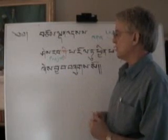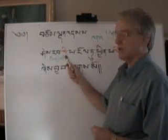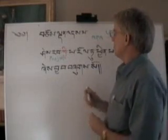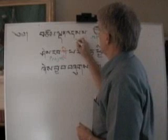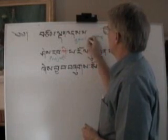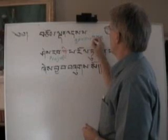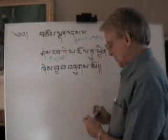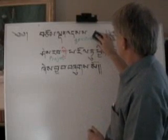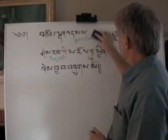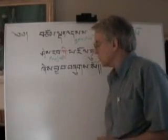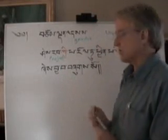The Tibetans call it a Drel-Dra. Drel means connection and Dra is term, so it's a connection term or a connecting particle. In the study of classical languages in the West, in English we call it a genitive particle — genitive with the same root as the English word 'generations.' In generations, people are linked together. The genitive particle links words, phrases, or entire sentences together.